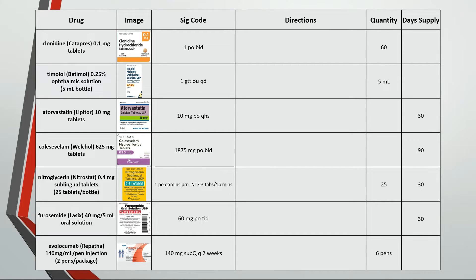Pause the video and try working out the solutions for the empty spaces in this table. We'll start off with 1PO BID, which is take one tablet by mouth twice a day. If we have 60 tablets and we're taking two tablets a day, then 60 divided by 2 is a 30-day supply.